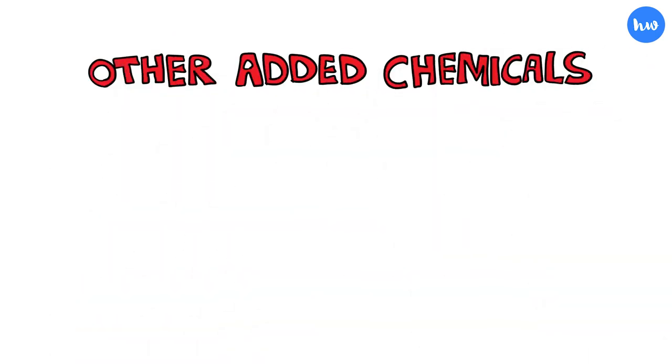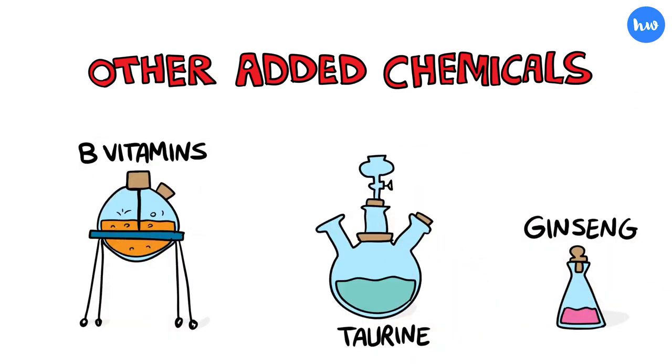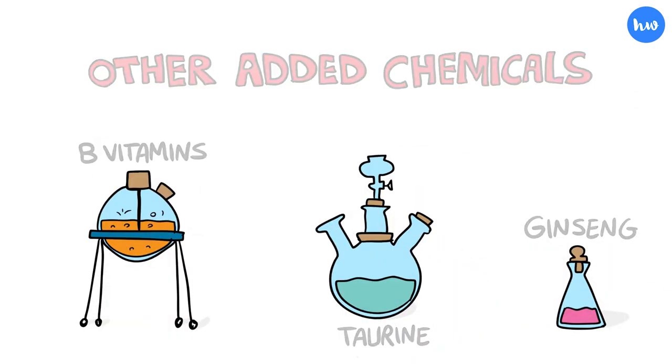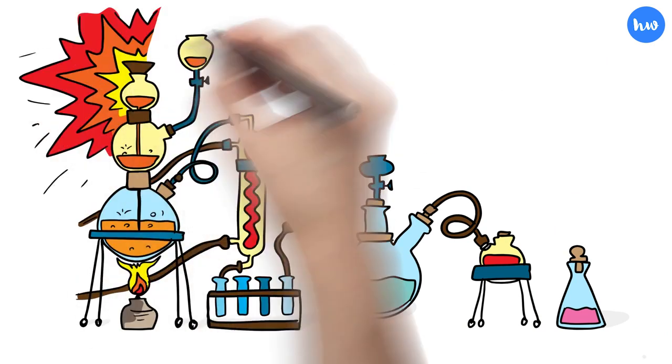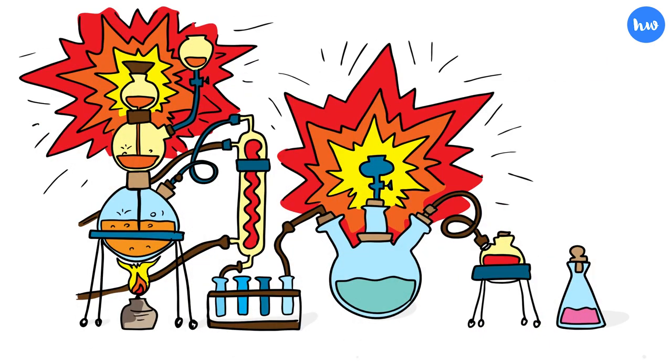But there are other added chemicals to consider. Ginseng, taurine, B vitamins, all harmless in moderation, but when consumed in excessive amounts and mixed with sugars and caffeine, it can make for a dangerous combination.